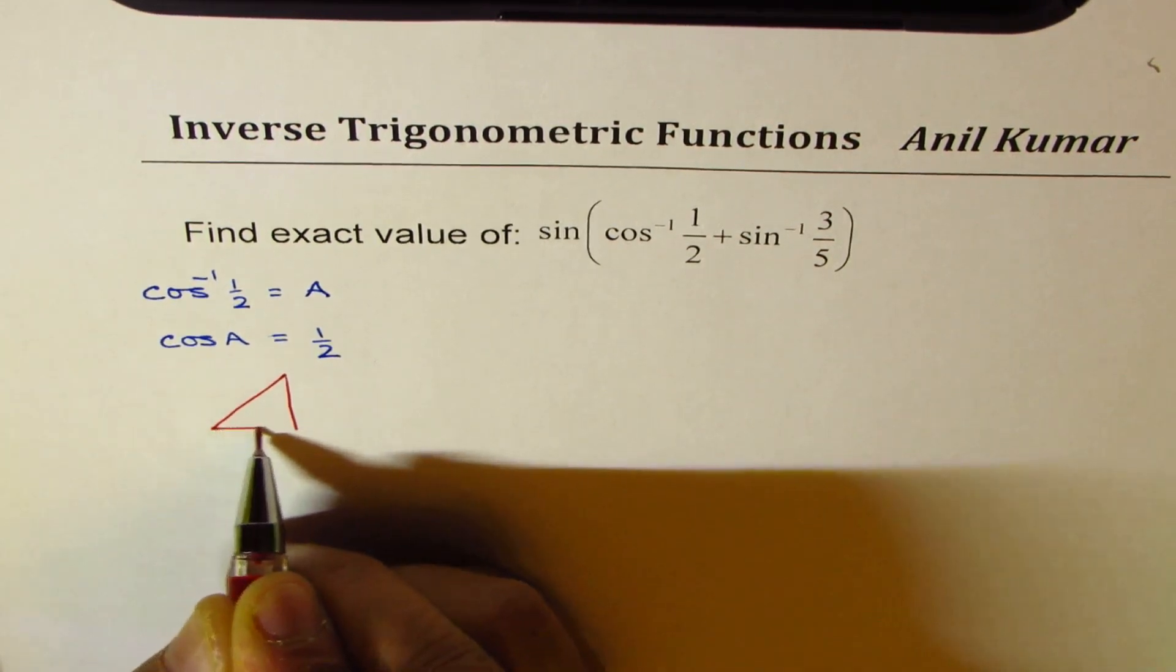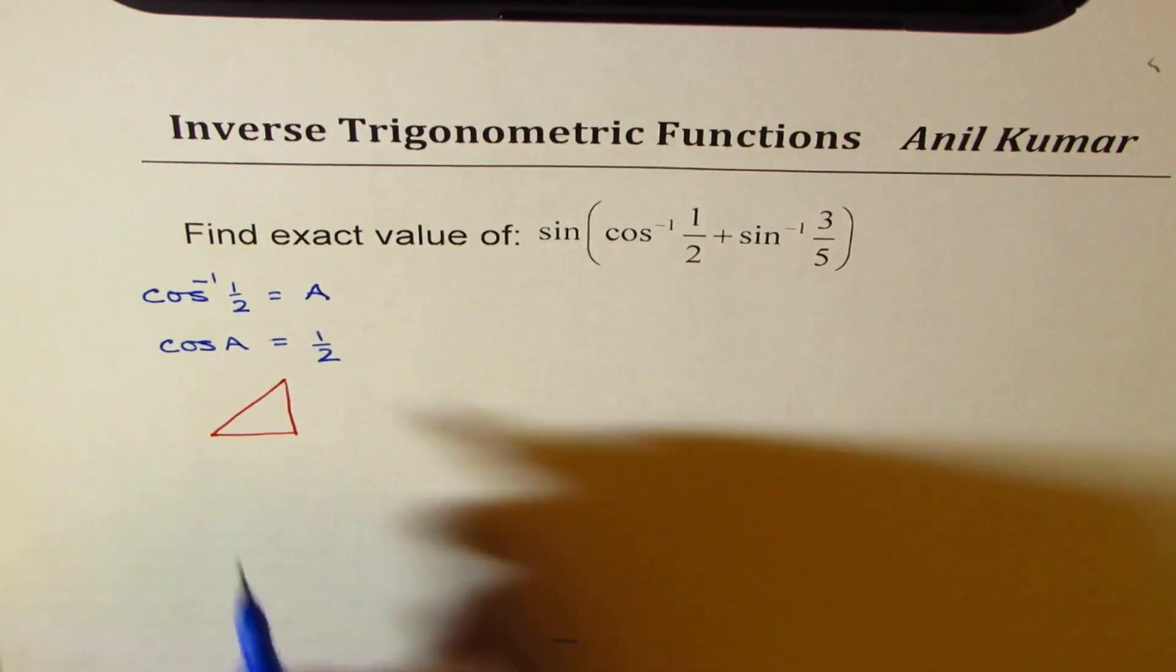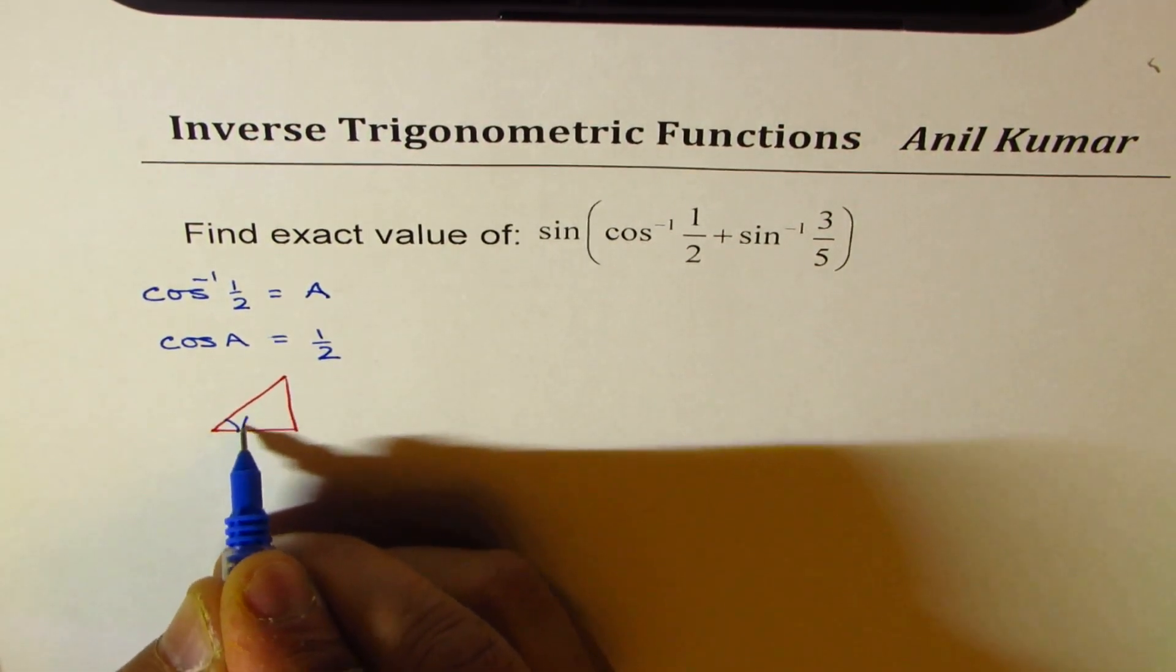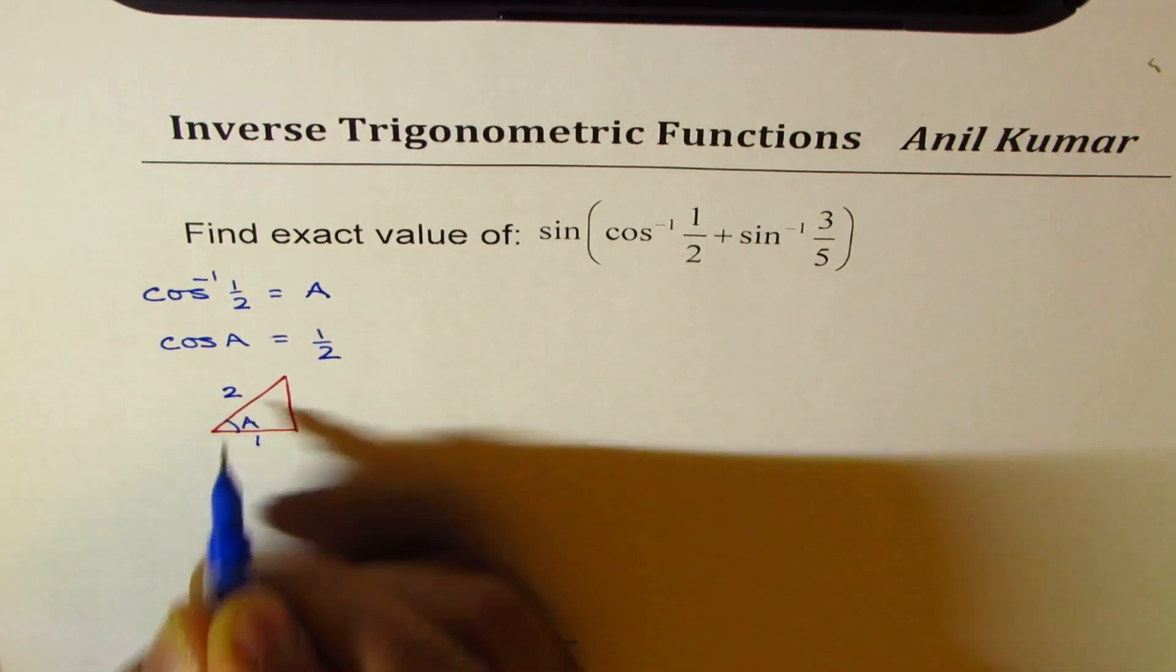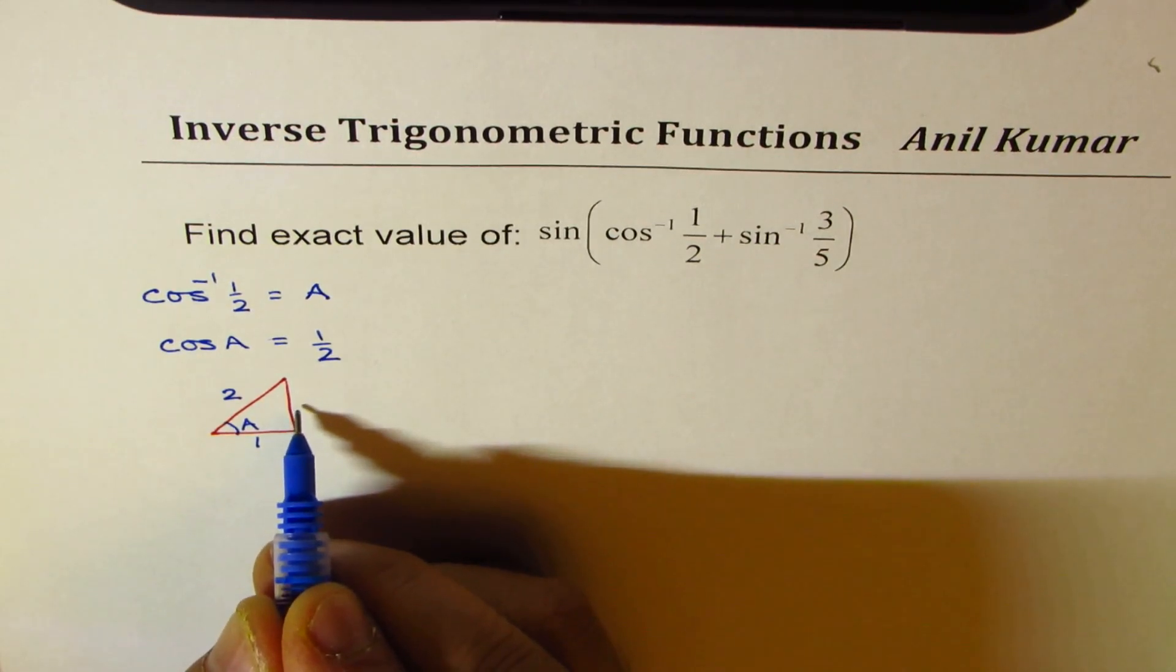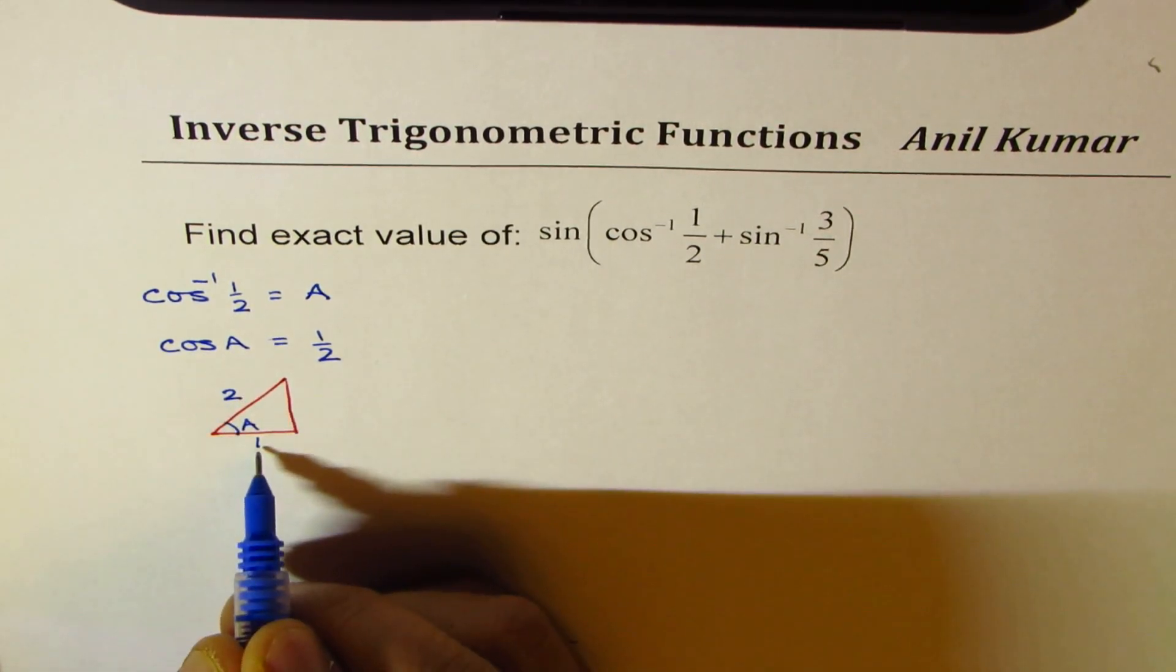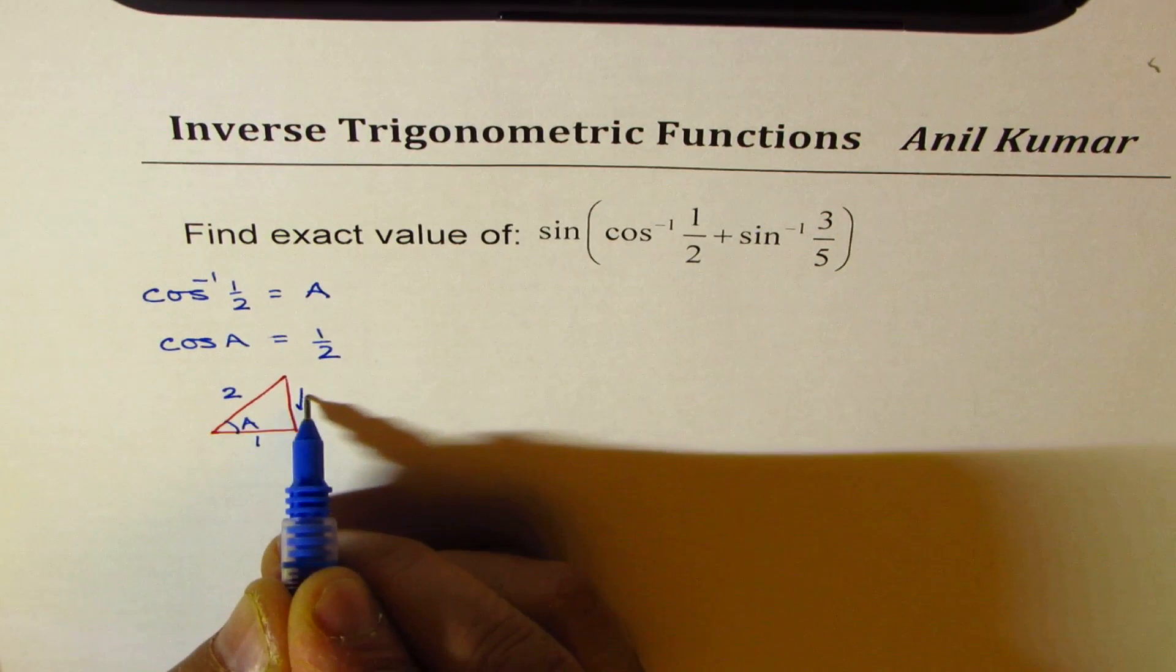So let us say this is our triangle where the angle A is this angle. Cos A is half means adjacent side to hypotenuse. And therefore that side should be 2 square minus 1 square square root, which is square root of 3.